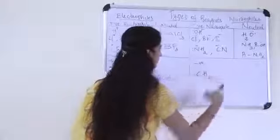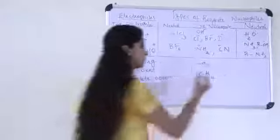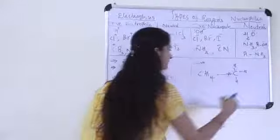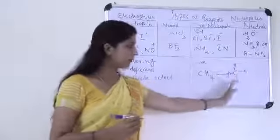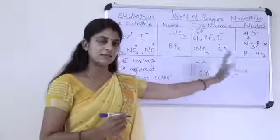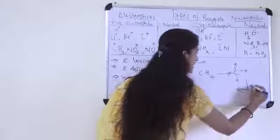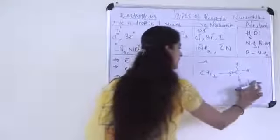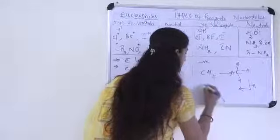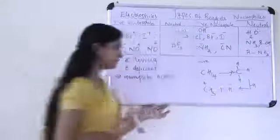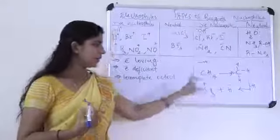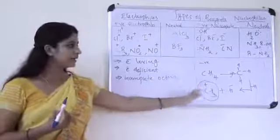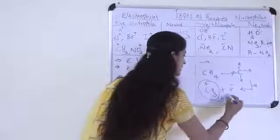Let's consider the molecule CH4. We can write it as C with four H atoms — a total of 8 electrons. In this molecule, we can say the octet is completed. Suppose one of the hydrogens is leaving from the species. Then what will happen? That is, CH3 plus and H minus. CH3 plus is called the carbocation. This species is called the carbocation. How many electrons are there in it? We can say there are 6 electrons in this species.